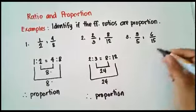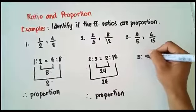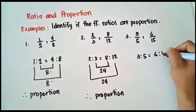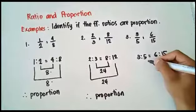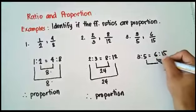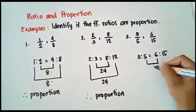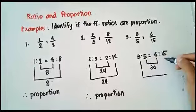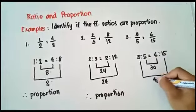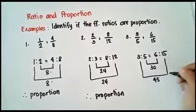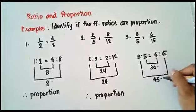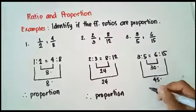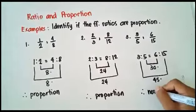For number three, we have 3 is to 5 is equal to 6 is to 15. Let us multiply: 5 times 6 is 30. Then 3 times 15 is 45. The means product is 30 and the extremes product is 45. They are not equal, therefore this is not a proportion.